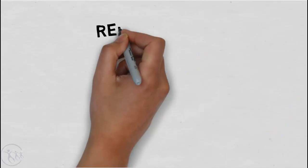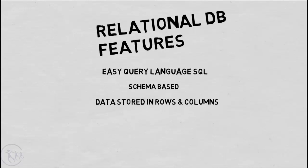So let's get started by looking at the typical features of a relational database. It has an easy query language called SQL, or Structured Query Language. It's schema based. They store data in tables made up of rows and columns, similar to a spreadsheet, and the tables can be joined together via a mechanism of primary keys and foreign keys.